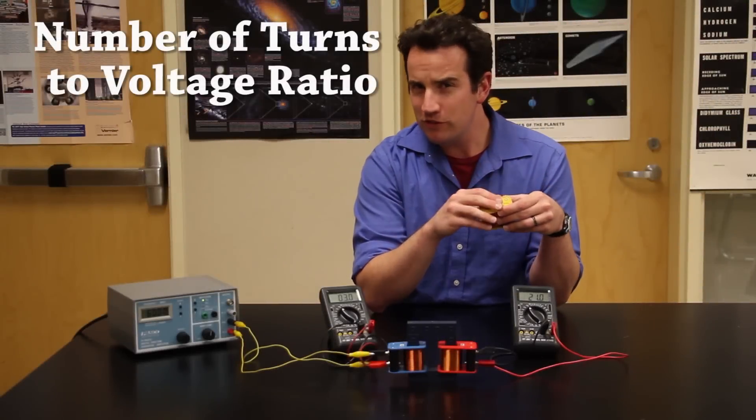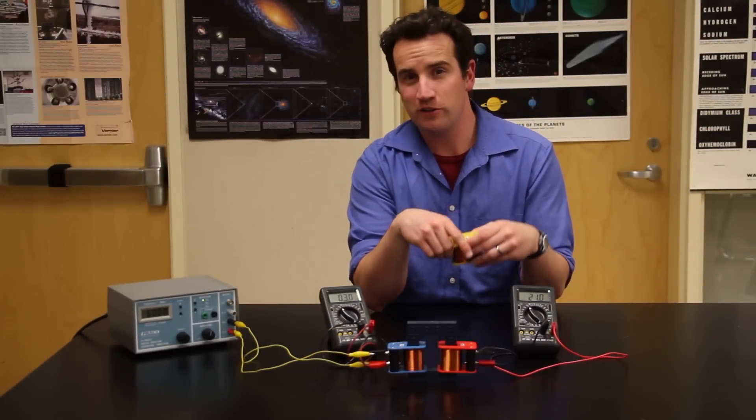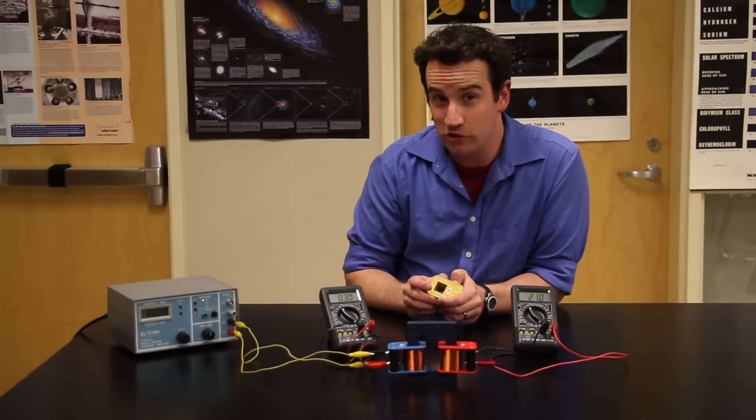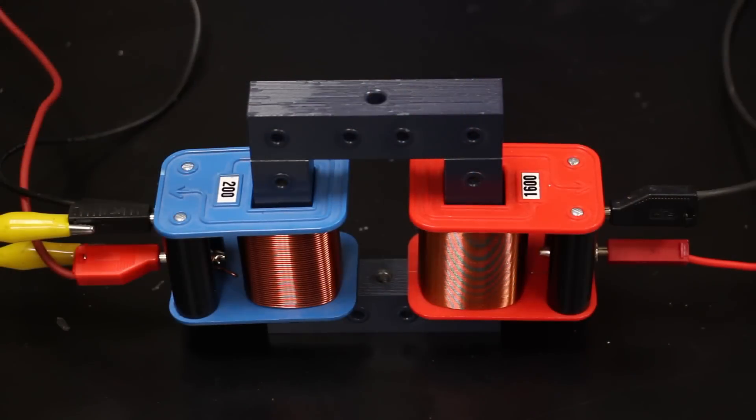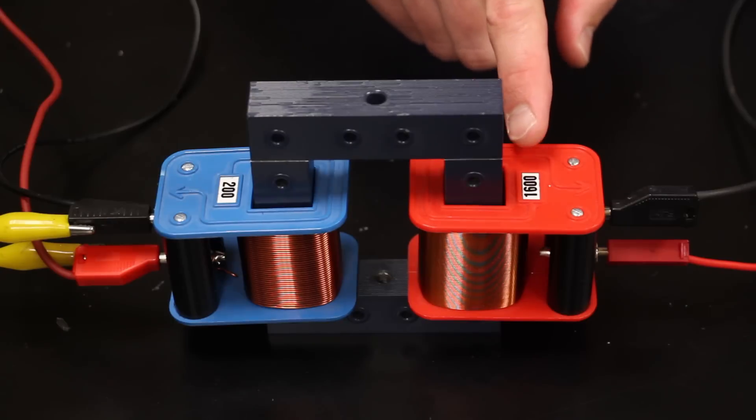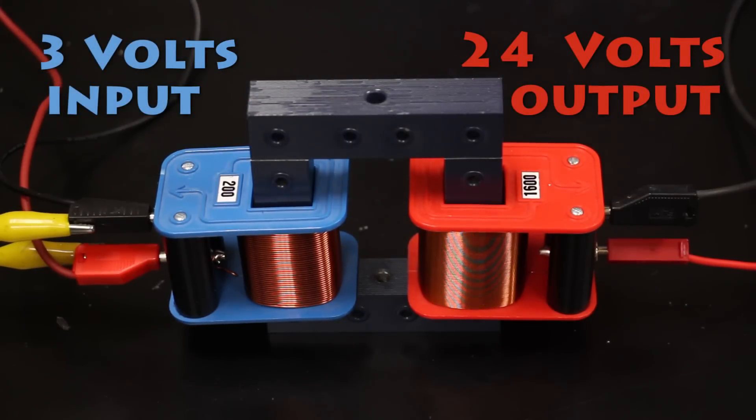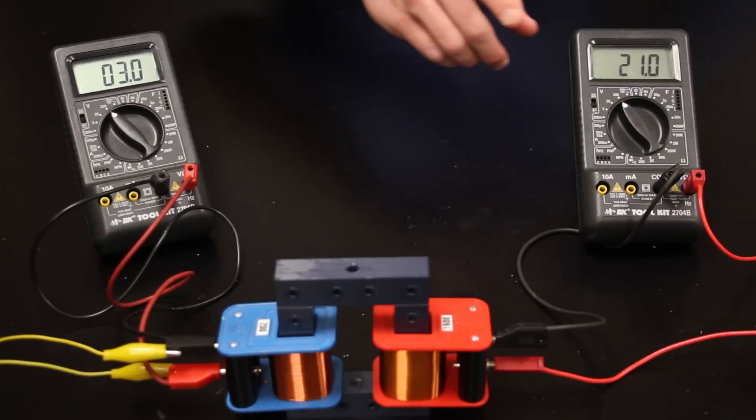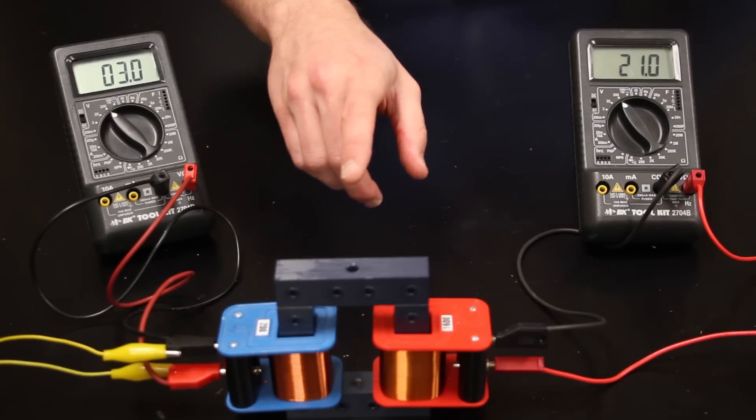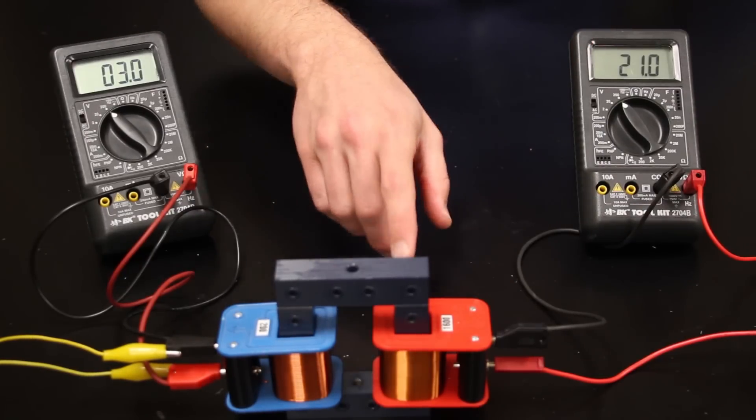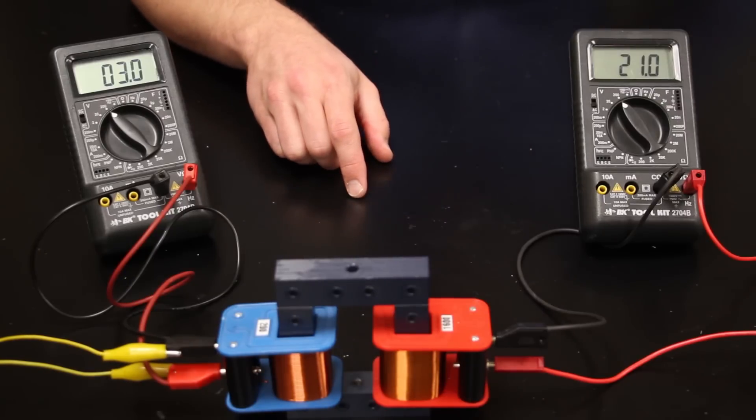The number of turns on an ideal transformer is in proportion to the voltage across those turns. Here, I have turns in an 8 to 1 ratio, and the voltage of 3 volts from my signal generator is stepped up by that same ratio. It should be 3 volts to 24 volts, but this is not an ideal transformer, and there are some losses, mostly due to flux leakage.